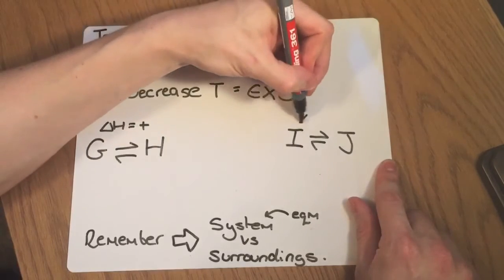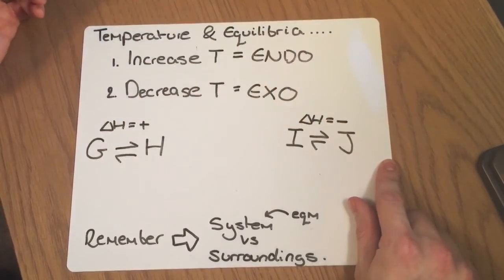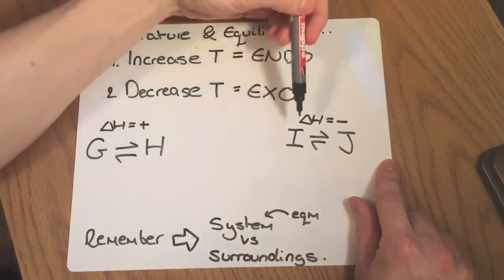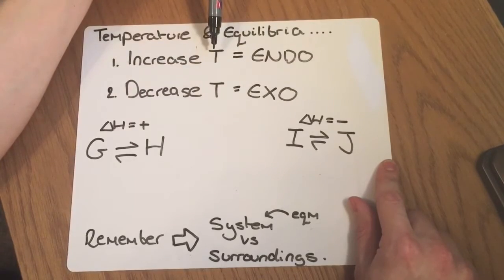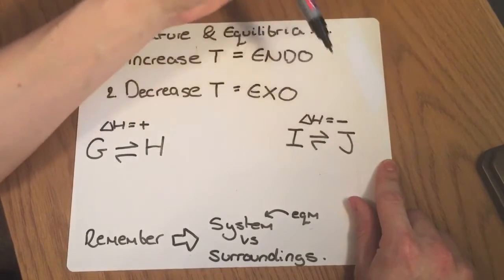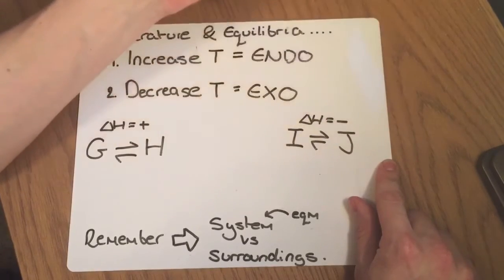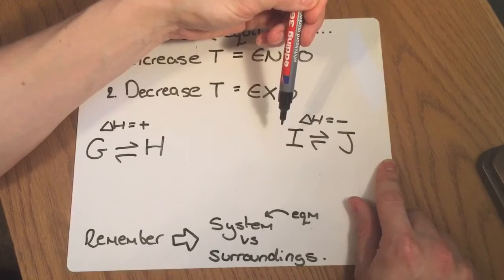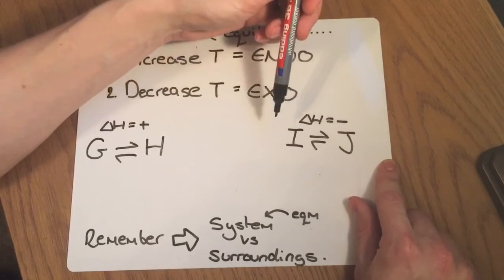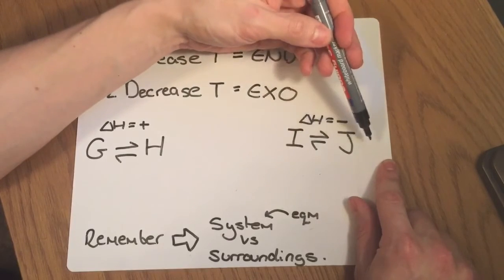I can do the same over here. So the delta H, if that was negative for this one, for I into J, then that tells me the forwards reaction is exothermic. So if I was to increase the temperature of this system and its surroundings, if I was to increase that temperature, then the equilibrium would shift to the left hand side. So it would shift in the endothermic direction. And if I was to decrease the temperature, it would shift to the right hand side.